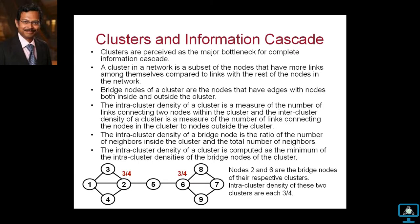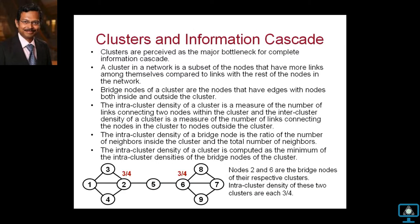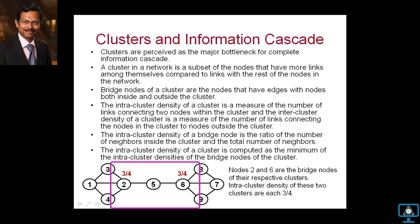A cluster is a subset of nodes in the network that have more links among themselves compared to links with the rest of the network. Clusters are considered a major bottleneck for accomplishing complete information cascade. There are some nodes in the cluster called bridge nodes — nodes that have links to nodes both within the cluster and outside it. For example, node two is the bridge node for cluster {1,2,3,4}, and node six is the bridge node for cluster {6,7,8,9}.